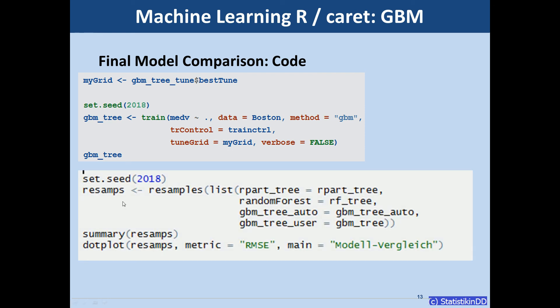And we use the resamples function again for the cross validation and to compare the four models that we have now. The single decision tree. The random forest model that our colleague thinks will win.